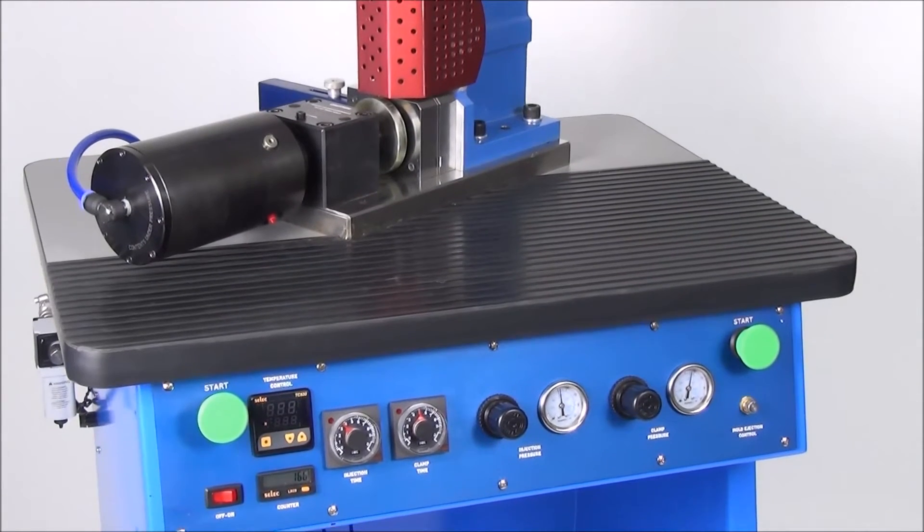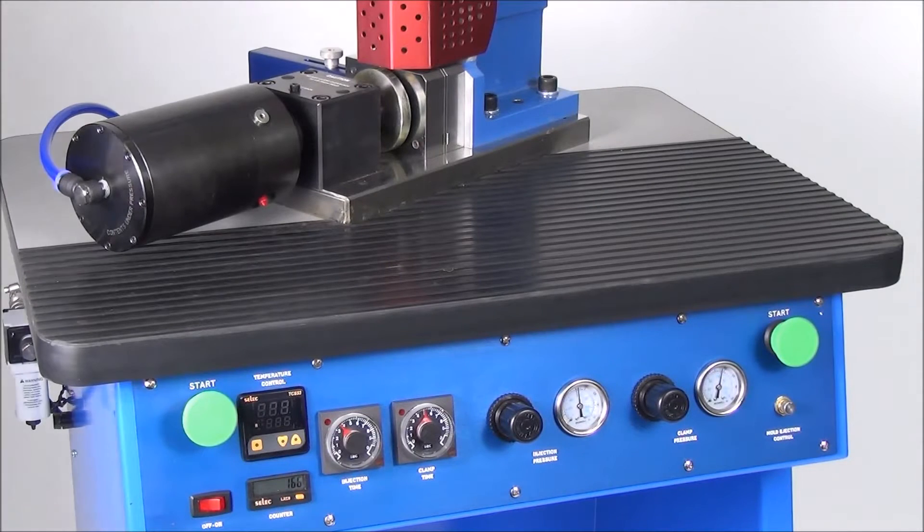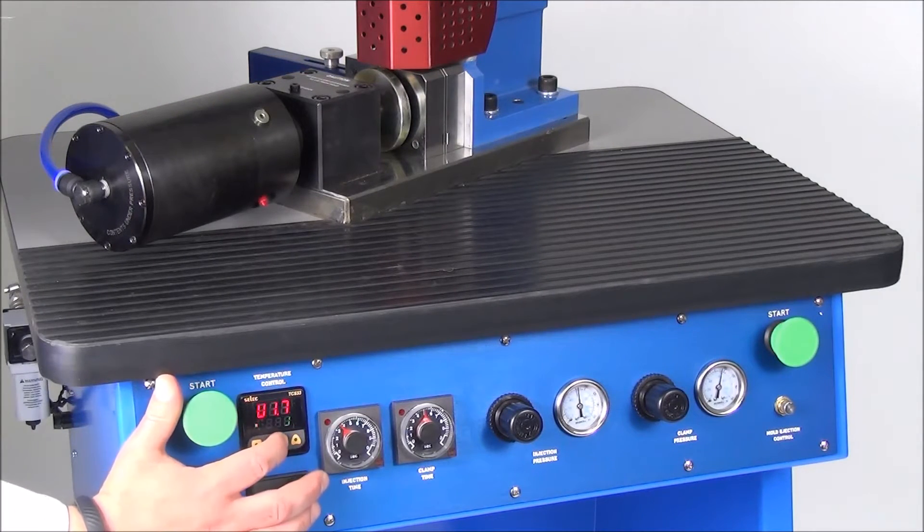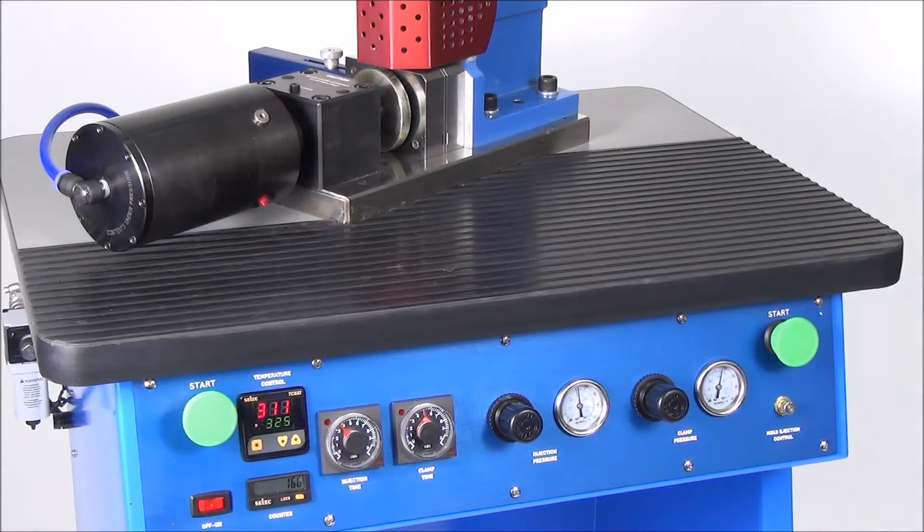First, turn the machine on and set the injection chamber temperature controller to the desired temperature. For this demonstration, we are using a clear polyethylene and set up the temperature accordingly.